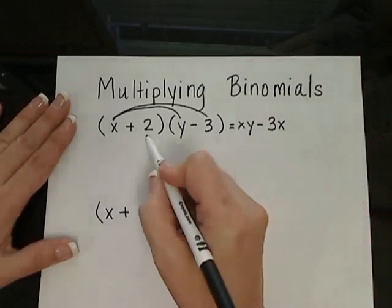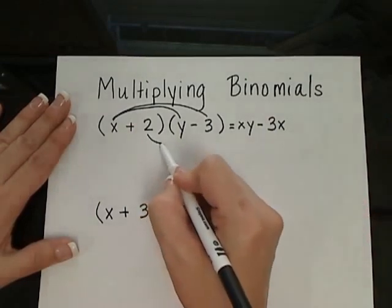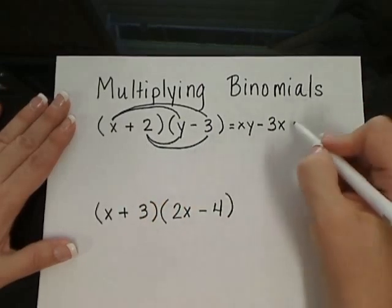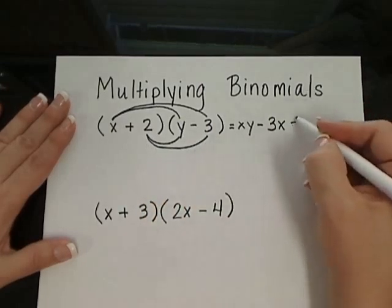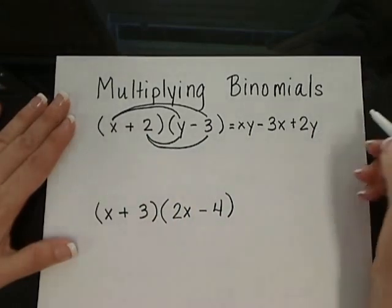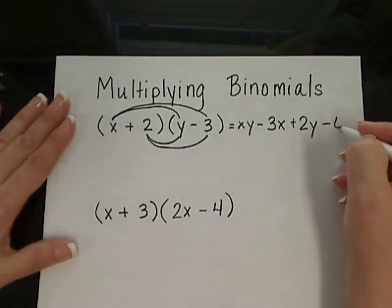Now we're also going to be distributing the 2 from the first parentheses to the y, and also to the minus 3. So 2 times y gives me 2y, and 2 times minus 3 gives me minus 6.